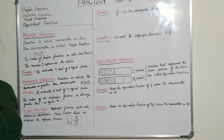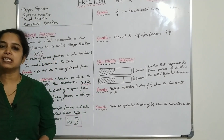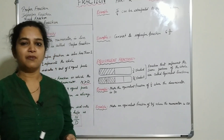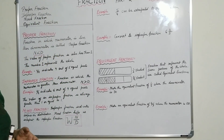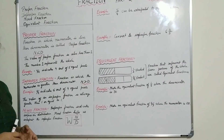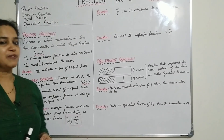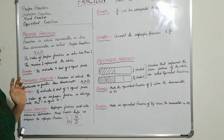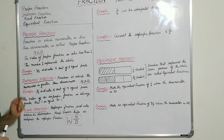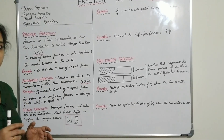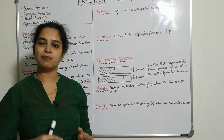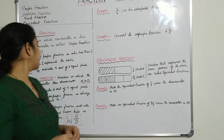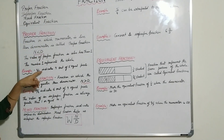Proper fractions are those in which the numerator is less than the denominator. For example, 1 by 4 is a proper fraction and 3 by 4 is a proper fraction, but 5 by 4 is not a proper fraction. The value of a proper fraction is always less than 1, where 1 represents the whole number.